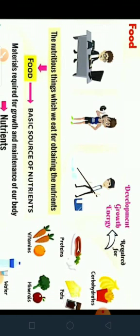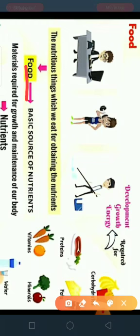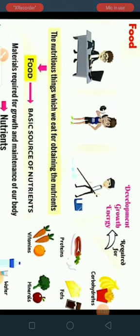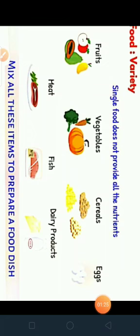Water is also essential. The materials required for energy, growth, and development are called nutrients — basically, materials required for growth and maintenance of our body are called nutrients. So, what is the source of nutrients? Food. Food is the basic source of nutrients — the things which we eat for obtaining nutrients is food.